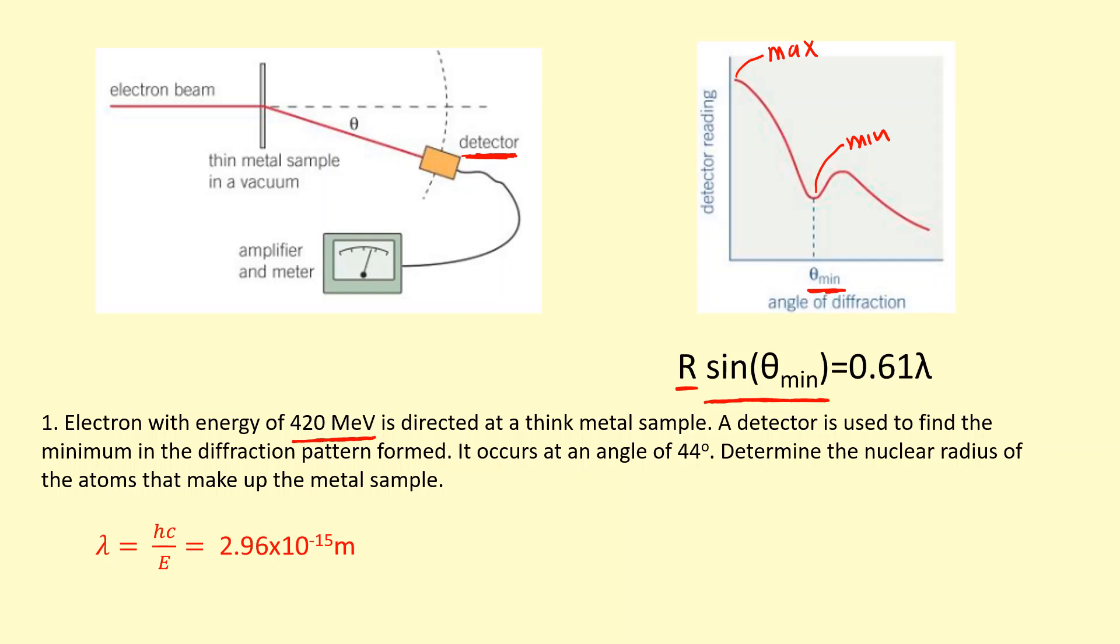So we know it's going to diffract with a wavelength of 2.96 times 10 to the minus 15 meters. We've got the wavelength, and it turns out here the angle at which you get the minimum reading is 44 degrees.